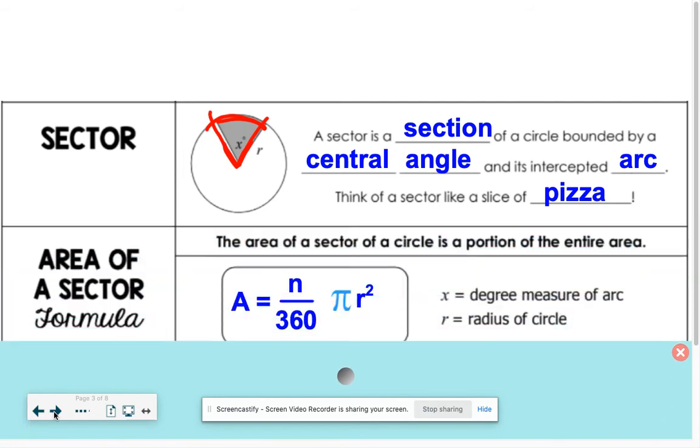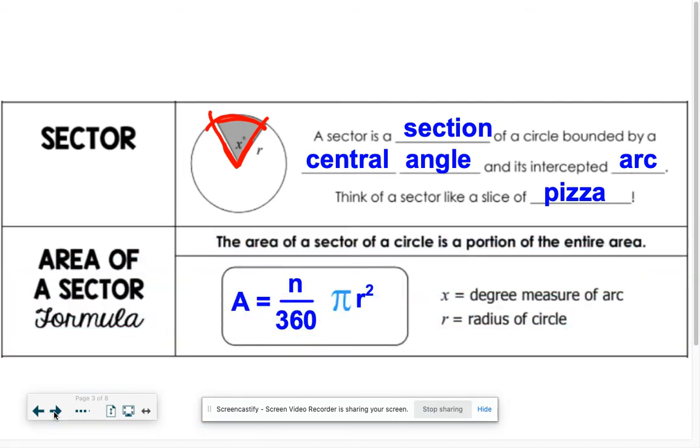We're able to find the area of a sector by taking the portion of the circle we want, which is right here. This is the portion: n is your degree, so whatever your central angle is.